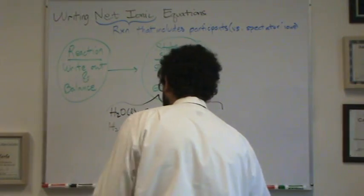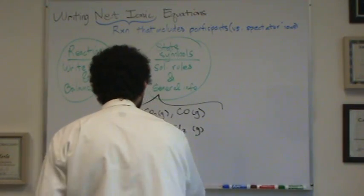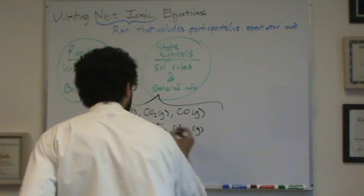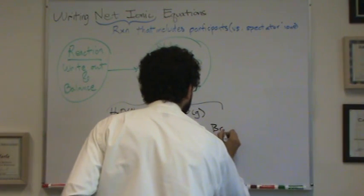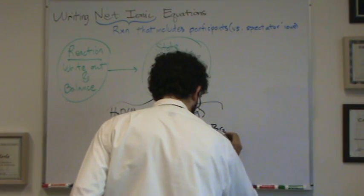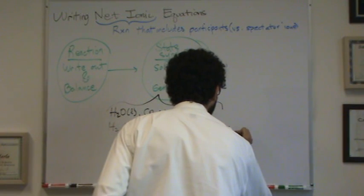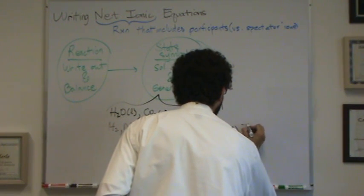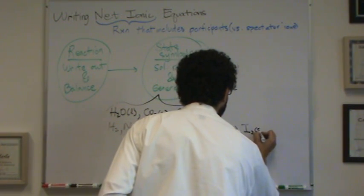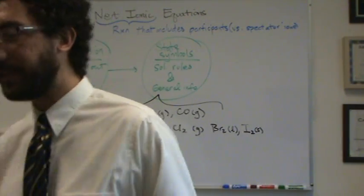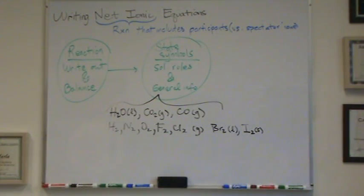There's a couple other diatomics as well. And that's Br2 and I2. What you might not know about them is their state. Br2 is a liquid and I2 is a solid. If you're wondering why that happens, it's because it gets bigger and heavier.